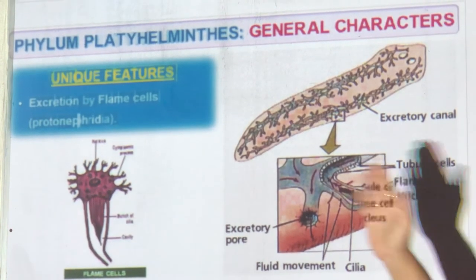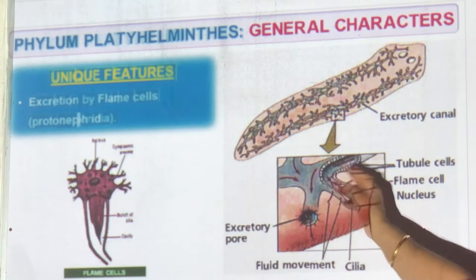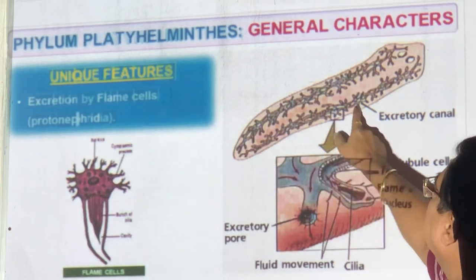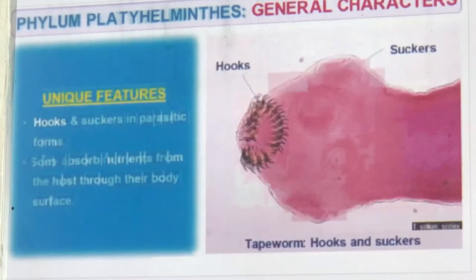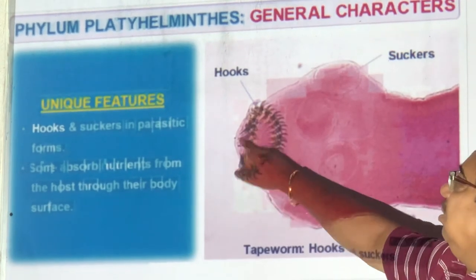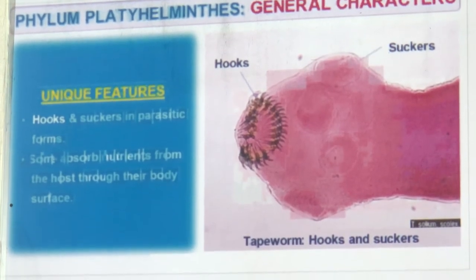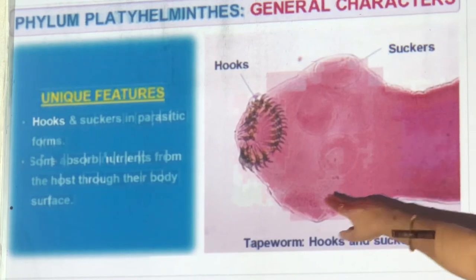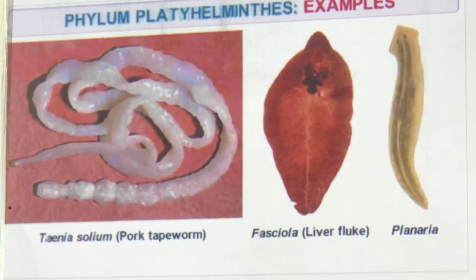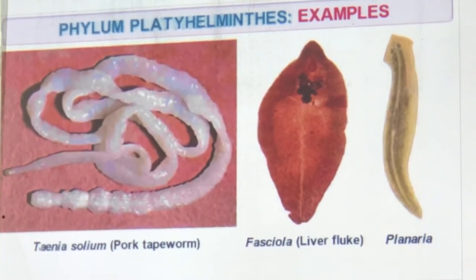Flame cells have cilia and excretory pores through which all waste is thrown out. Parasitic features include hooks and suckers to attach to the host body. Suckers work like suction cups on glass. Examples in our syllabus: Taenia solium (pork tapeworm), Fasciola (liver fluke), and Planaria.